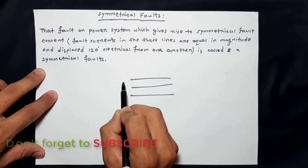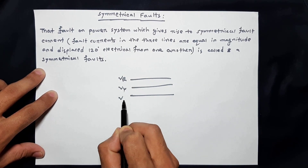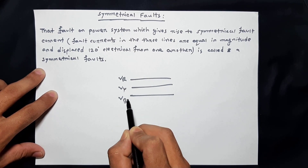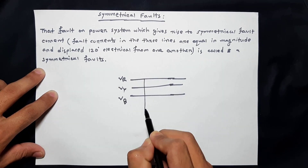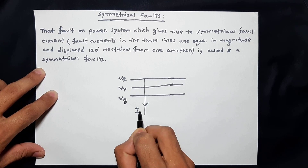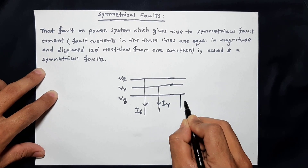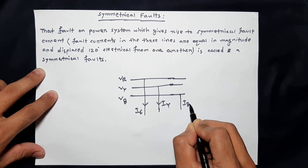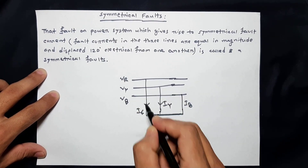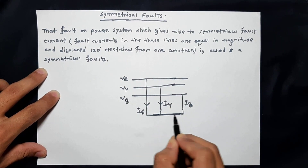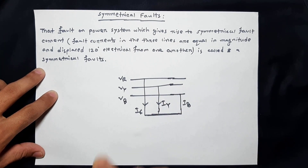Suppose the three phases are red, yellow, and blue. The voltages are VR, VY, and VB — red, yellow, and blue phase. The currents flowing are IR, IY, and IB in the respective phases. In such a scenario, when the three phases are shorted — red, yellow, blue, all three short-circuited — then the fault becomes symmetrical. The second part will be symmetrical and so will the third part.